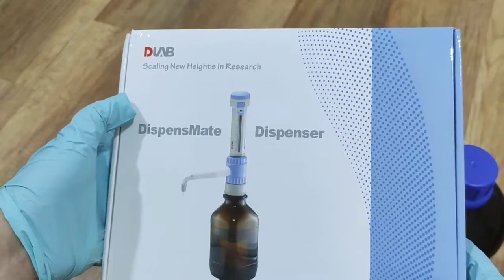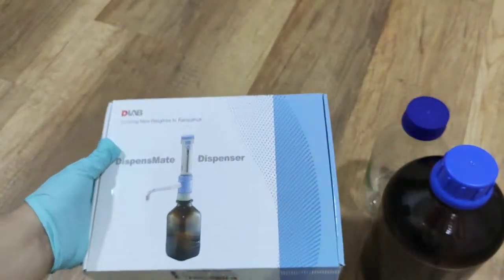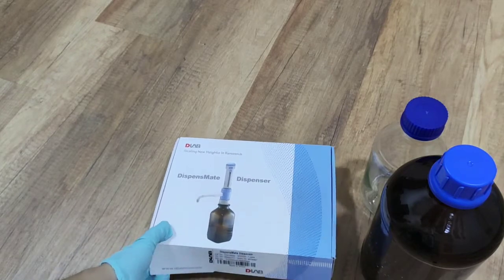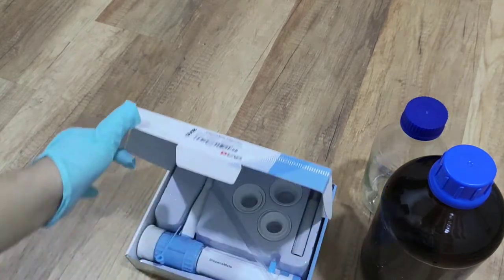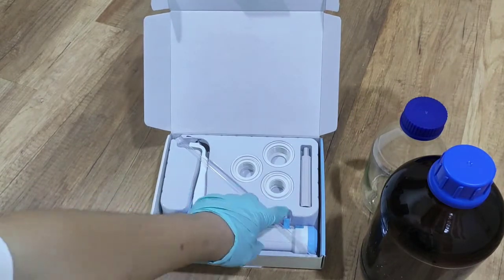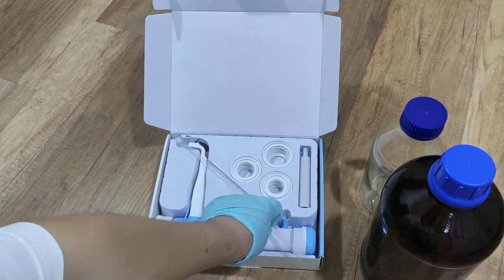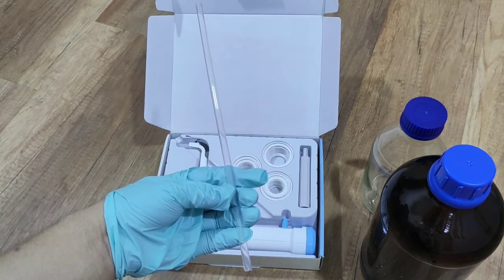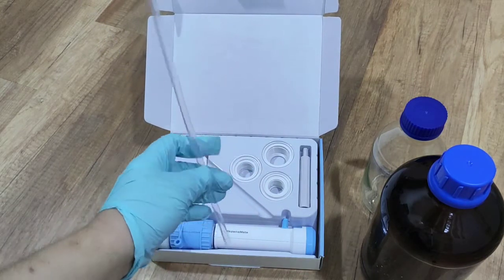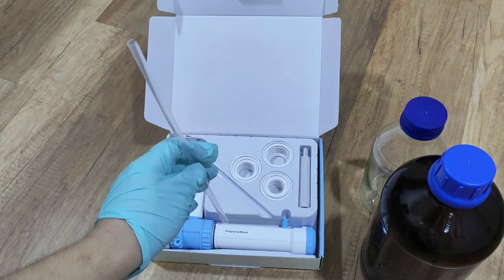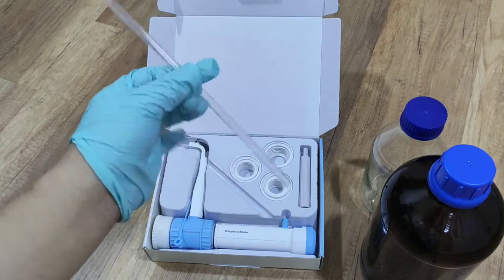So let me show you what's inside of this box. These are the pipes. The pipes connect from the dispenser and reach to the bottle. This is the pipe.